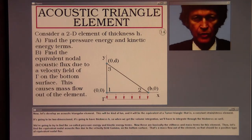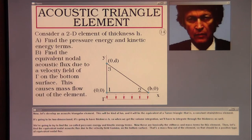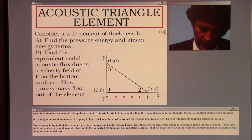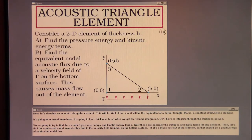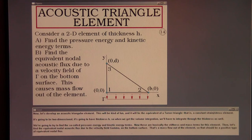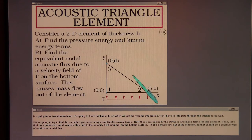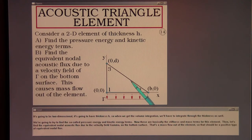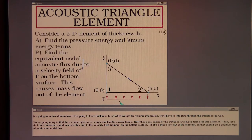Now let's develop an acoustic triangular element. This will be the equivalent of a Turner triangle — a constant strain/stress element. It's two-dimensional with thickness h, so volume integration requires integrating through the thickness as well. We're going to find the pressure energy term and the kinetic energy terms — basically the stiffness and the mass terms for this element. Then we'll find the equivalent nodal acoustic flux due to the velocity field Γ on the bottom surface, which is a mass flow out of the element.